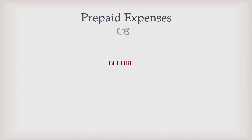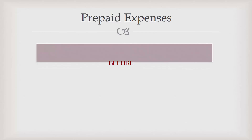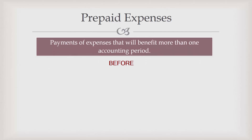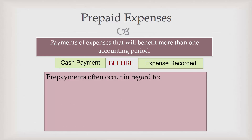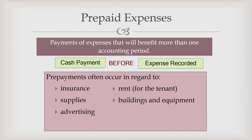When we're looking at the prepaid expenses category, the payment of expense lasts for more than one accounting period. So we're recording the cash in one period and the recognition of the expense is occurring in later periods. This most often occurs in areas such as buying prepaid insurance, buying supplies, advertising costs, rent when you are the tenant, and even buildings and equipment are a form of prepaid expenses.